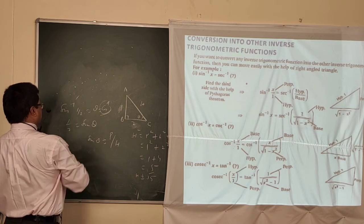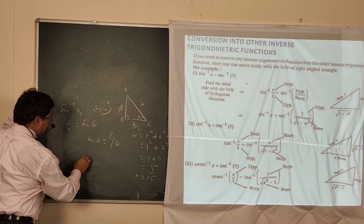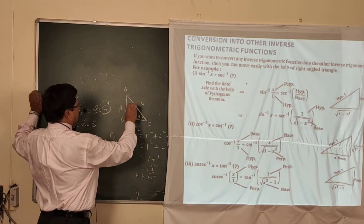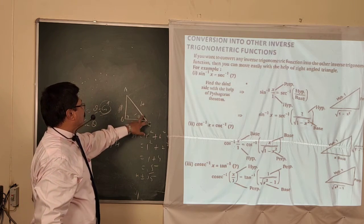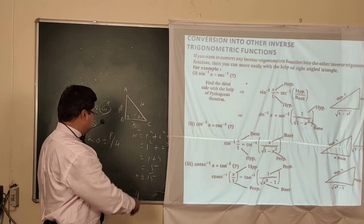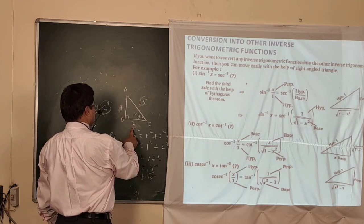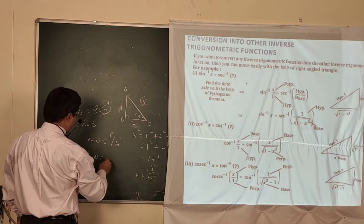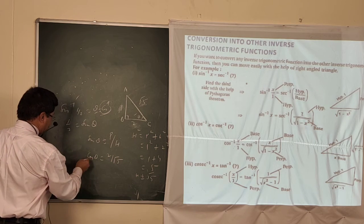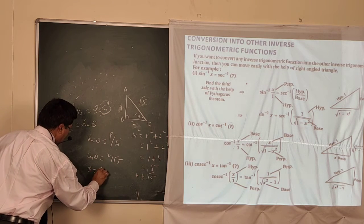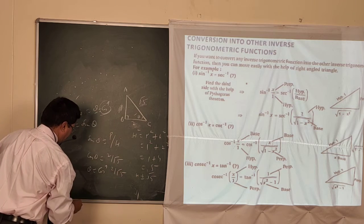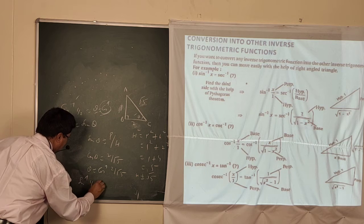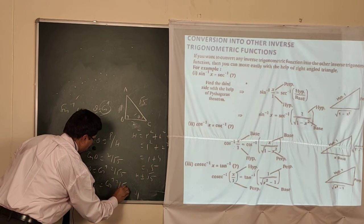So your hypotenuse is √5 and the base is 2. So cos θ = 2/√5. Now converting cos θ as an inverse function, θ = cos⁻¹(2/√5). And since θ = sin⁻¹(1/2), you can say sin⁻¹(1/2) = cos⁻¹(2/√5). Like this you can convert any trigonometric ratio into another form.